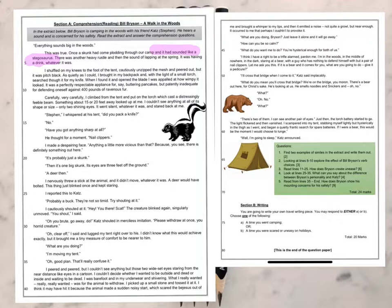'"Have you got anything sharp at all?" He thought for a moment. "Nail clippers." I made a despairing face. "Anything a little more vicious than that? Because there is definitely something out there." "It's probably just a skunk." "Then it's one big skunk — its eyes are three feet off the ground." "A deer, then." I nervously threw a stick at the animal and it didn't move. Whatever it was, a deer would have bolted. This thing just blinked once and kept staring. I reported this to Katz. "Probably a buck — they're not so timid. Try shouting at it."'